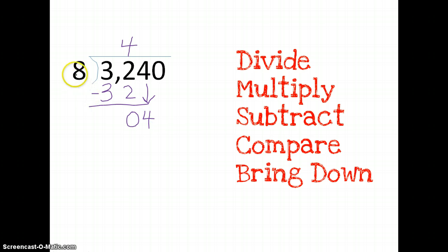Now, how many times will 8 go into 4? The answer is 0. So I'm going to write my 0 up here. 0 times 8 is 0. I'm going to subtract. I get 4. Compare. 4 is smaller than 8. Bring down my 0 here.